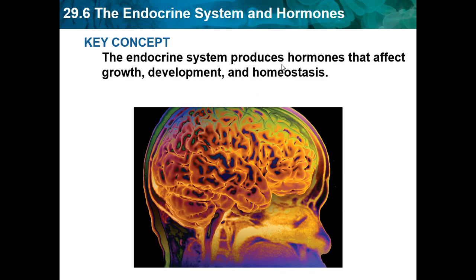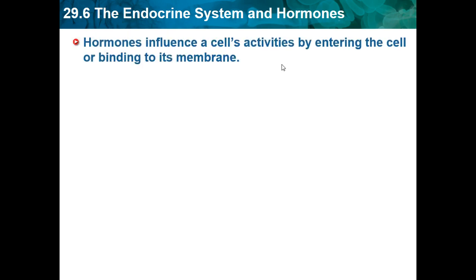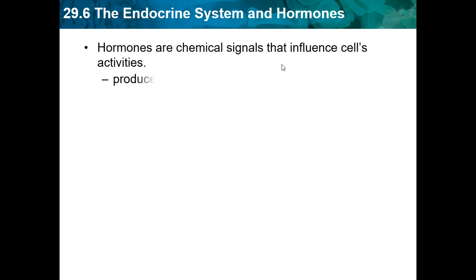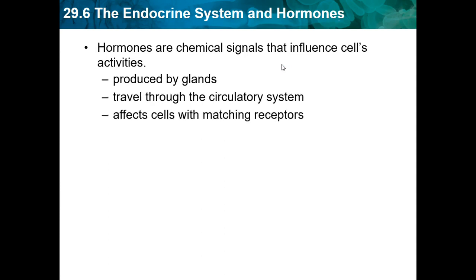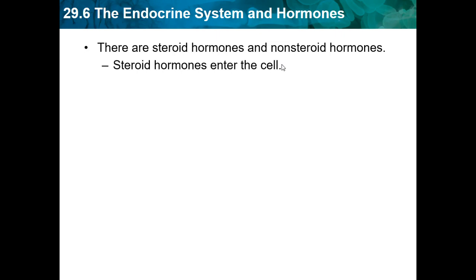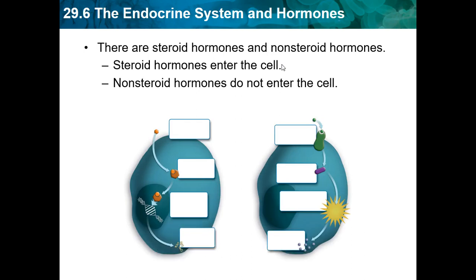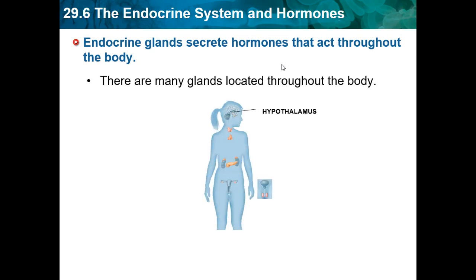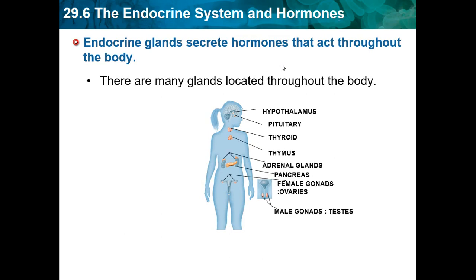Section 29.6 covers the endocrine system and hormones. The endocrine system produces hormones that affect growth, development, and homeostasis, communicating through chemical means. Hormones influence a cell's activities by entering the cell or binding to its membrane. Glands are the organs of the endocrine system. Hormones are chemical signals produced by glands, travel through the circulatory system, and affect cells with matching receptors. There are steroid hormones, which enter the cell, and non-steroid hormones, which do not. Endocrine glands are located throughout the body: hypothalamus, pituitary, thyroid, thalamus, adrenal glands, pancreas, and female and male glands.